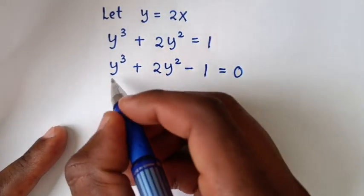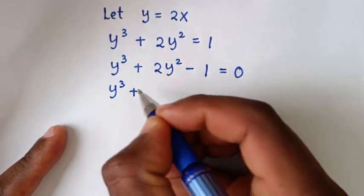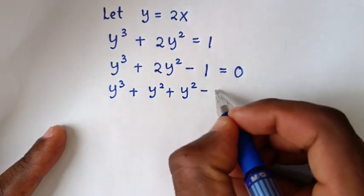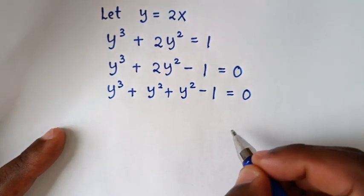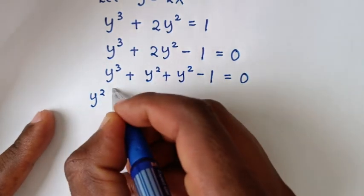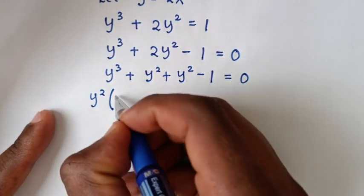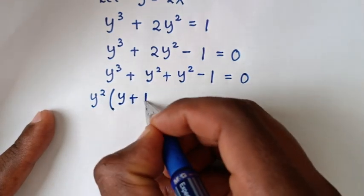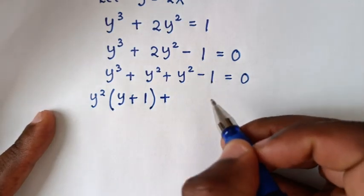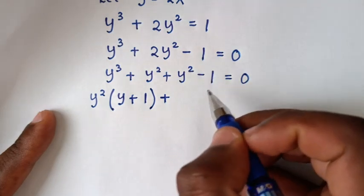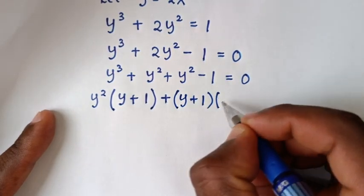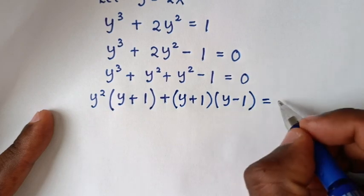In the next step, we split 2y² as y² + y² + y², so the equation is y³ + y² + y² + y² - 1 = 0. We factor y² from the first two terms: y²(y + 1), then we note that y² - 1 = (y+1)(y-1), giving y²(y + 1) + (y+1)(y-1) = 0.